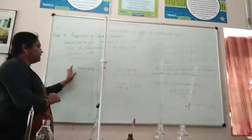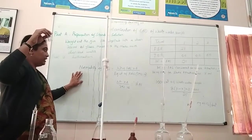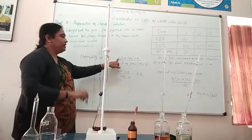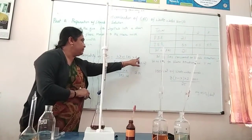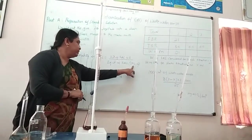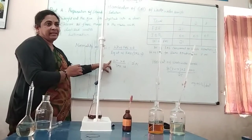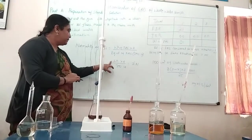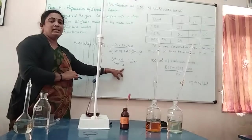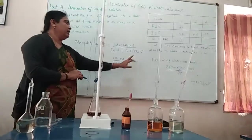Coming to the calculation part: first you have to calculate the normality of the given FAS salt. W1 minus W2 gives you the weight of the FAS salt taken. Multiply that by 4, divided by the equivalent weight of FAS, which is 392.14. So normality = (weight of salt × 4) / 392.14. This gives you Z, the normality of the FAS solution.